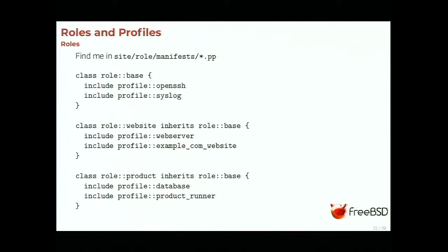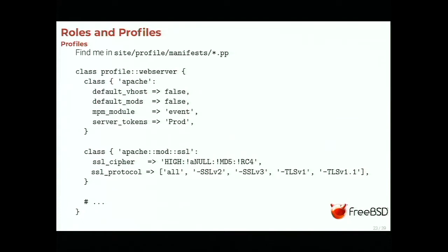The website role includes four different profiles: web_server, example_com_website, openssh, and syslog. The same applies for the product role. Profiles, just like roles, are stored in the site/profile/manifests directory named after the profile name — so the web_server profile is site/profile/manifests/web_server.pp. Then we use resource-style declaration for the different resources. Here we use an Apache module and configure it: no default vhost, no default modules, the event MPM, not using default server tokens that reveal the Apache version, and configuring mod_ssl to only allow TLS 1.2 or better.